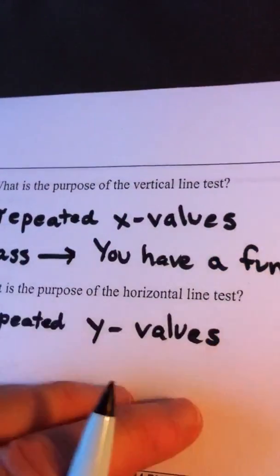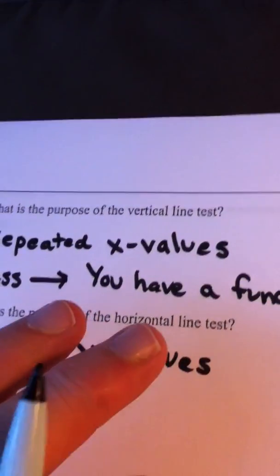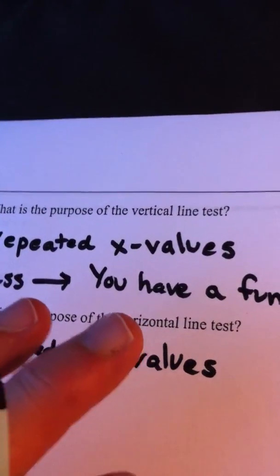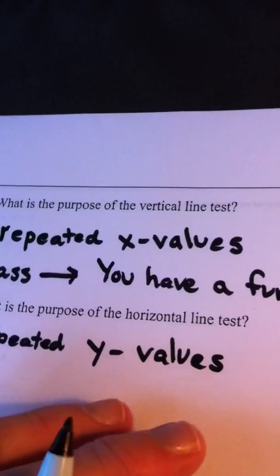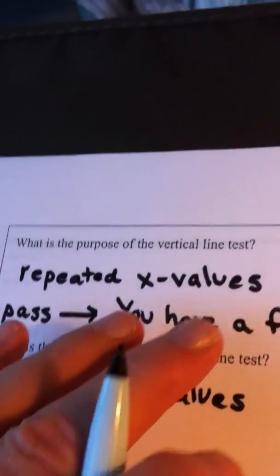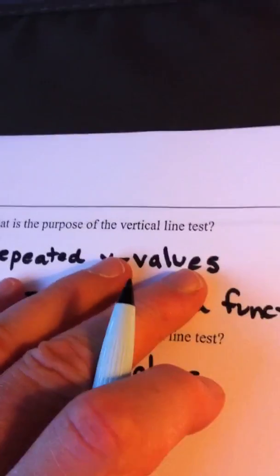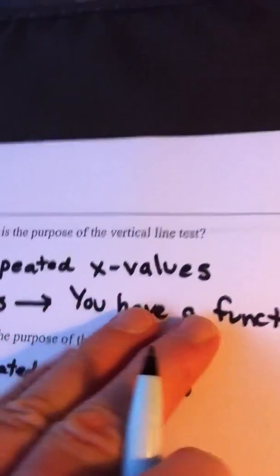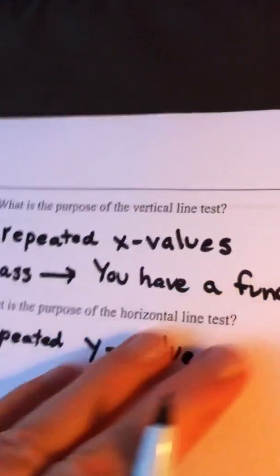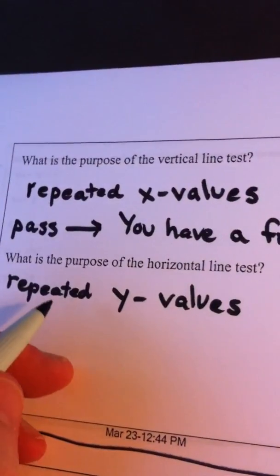But here's the way this works. When you're trying to decide if a function or a graph is a one-to-one function, you first perform the vertical line test. Once it passes, that means it's a function. The next test you perform is the horizontal line test,